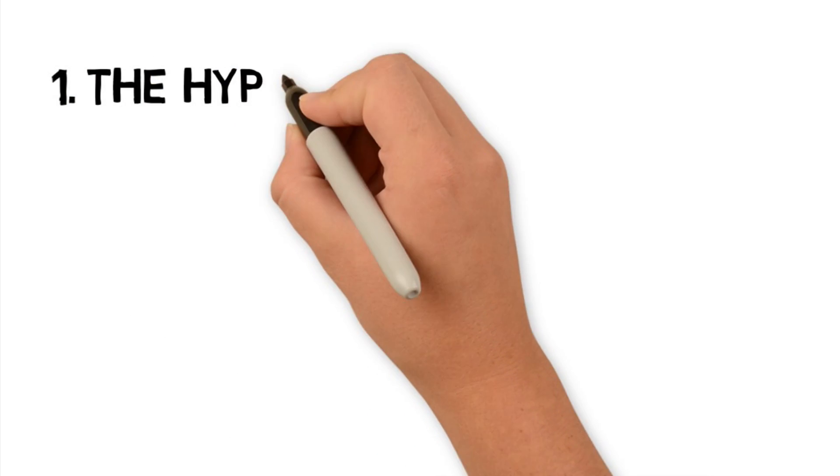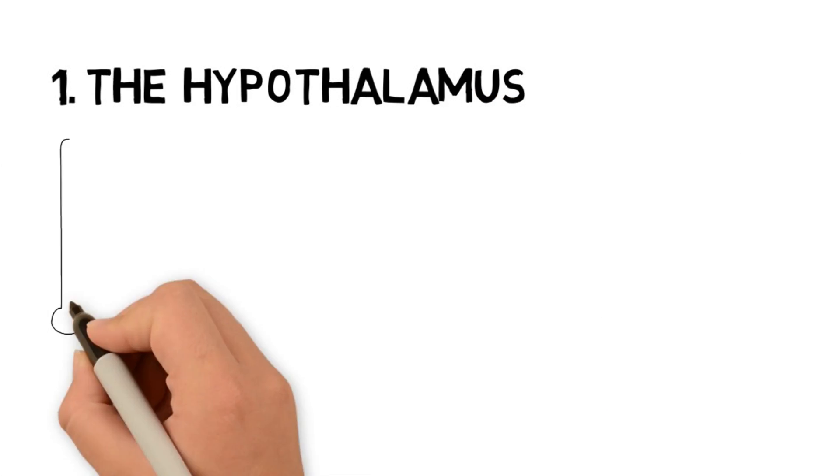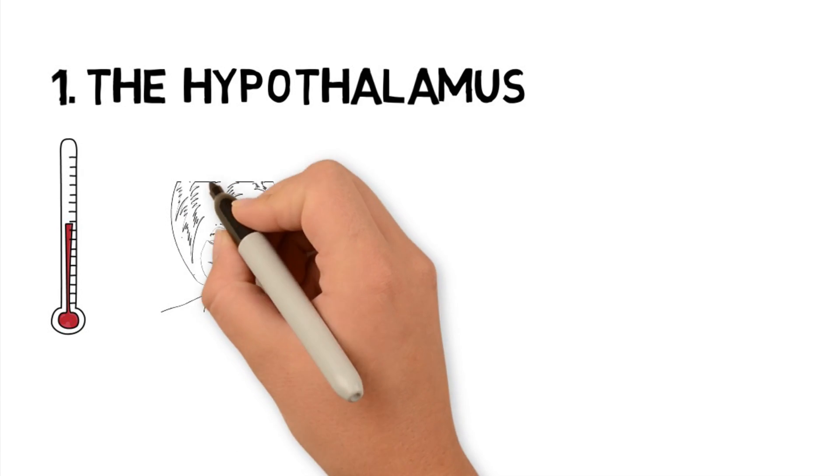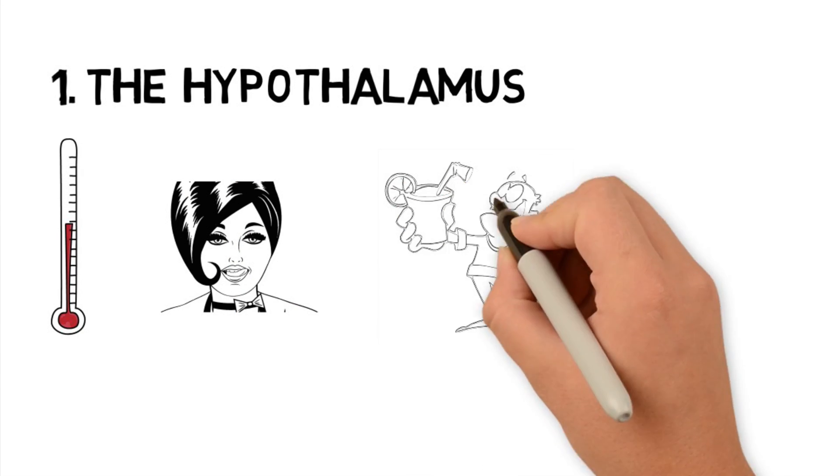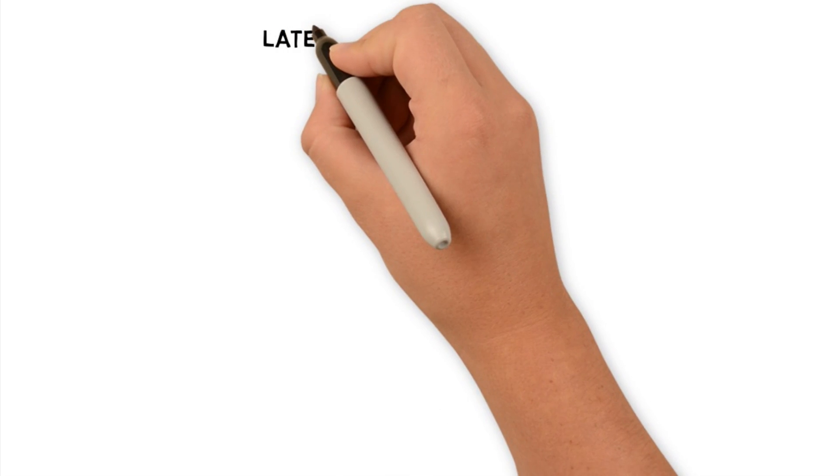First, we have the hypothalamus. This pea-sized structure has a plethora of functions. It is involved in our body temperature, sexual arousal, thirst, and our endocrine system, which is basically our hormone control. The hypothalamus also assists in our feelings of hunger.